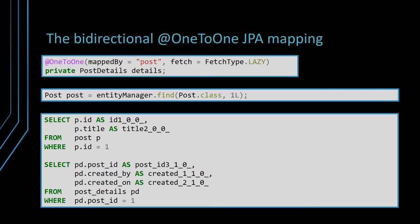This issue affects only the parent side of a bidirectional one-to-one JPA association. On the other hand, the child side which maps the associated foreign key column knows whether the parent reference is null or not by simply inspecting the foreign key column value. Therefore, the child side will assign a proxy only if the value of the foreign key column is not null; otherwise, the one-to-one JPA association to the parent entity will be set to null.